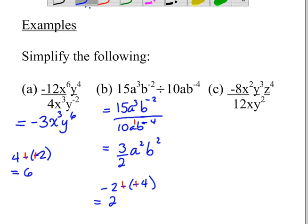And then this last one. Again, 12 does not go into 8 or negative 8 in this case. But 4 goes into both of those. So 4 goes into negative 8 negative 2 times. And 4 goes into 12 three times. So we're going to leave it as a simplified fraction.